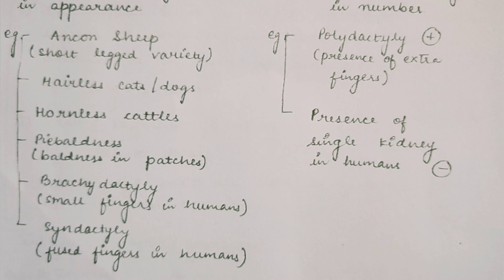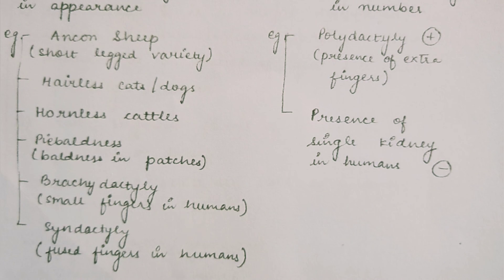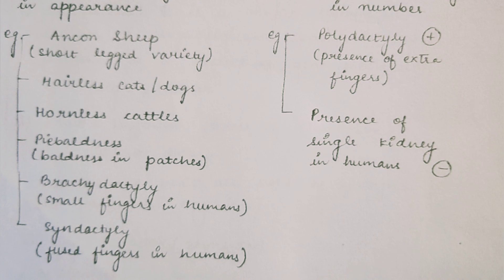With this, you now know what genetics is and what variation is. In the next class, we will study genetics concepts including monohybrid and dihybrid crosses and the transfer of characters. I am going to upload the next session soon.